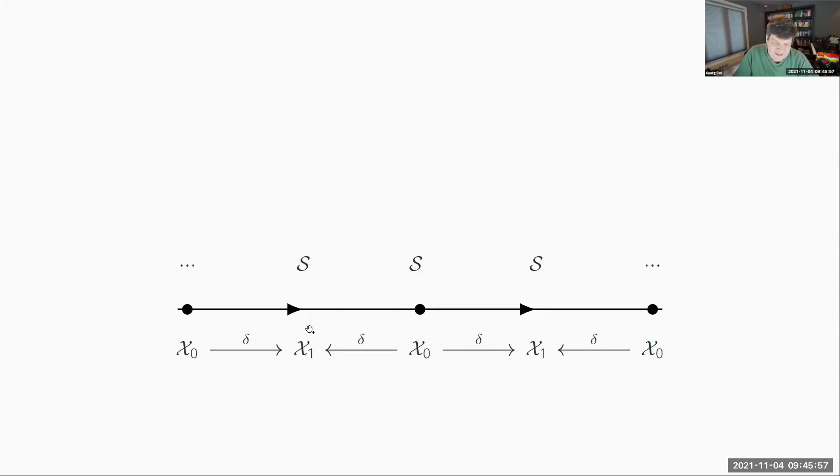The rules of a sheaf is that we actually do this for all the simplices in our simplicial complex. Over every single simplex, we attach some data. So that's the first criterion for a sheaf.